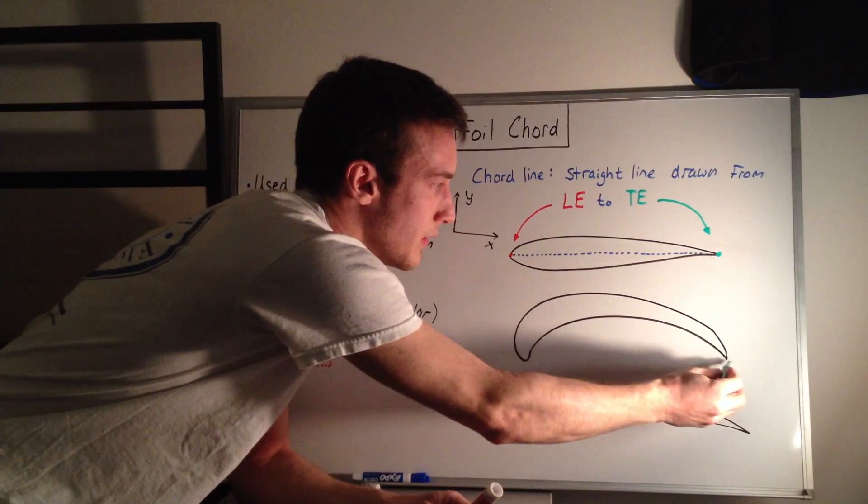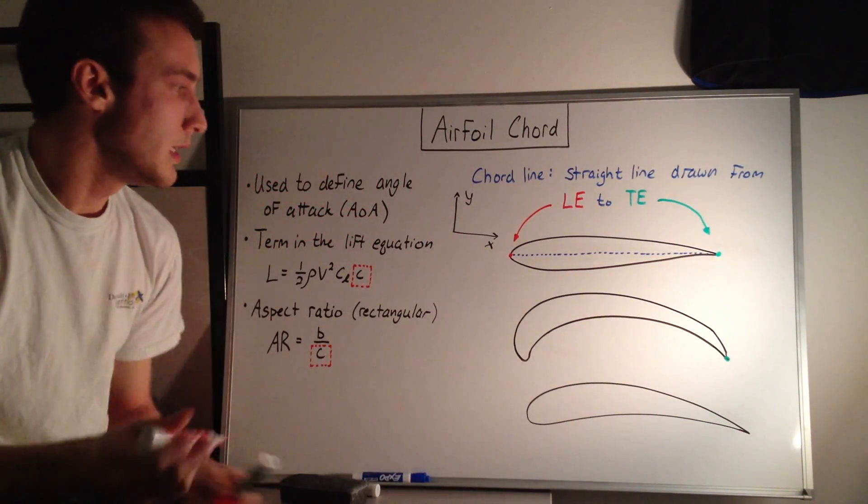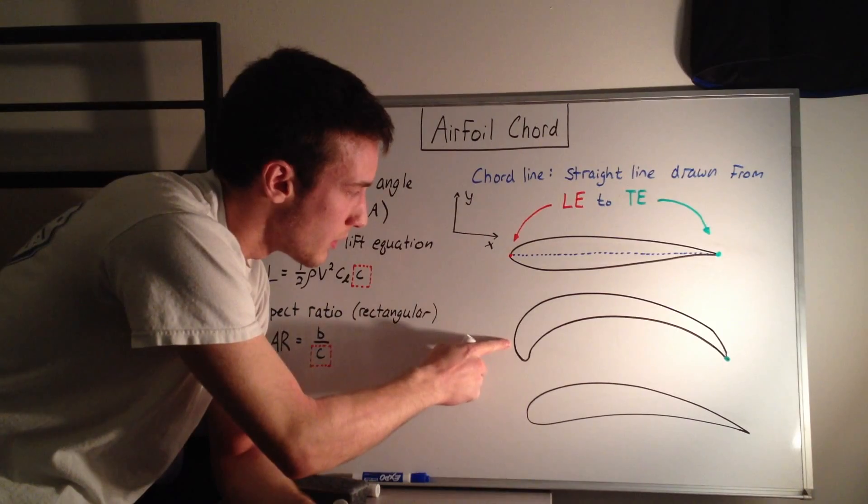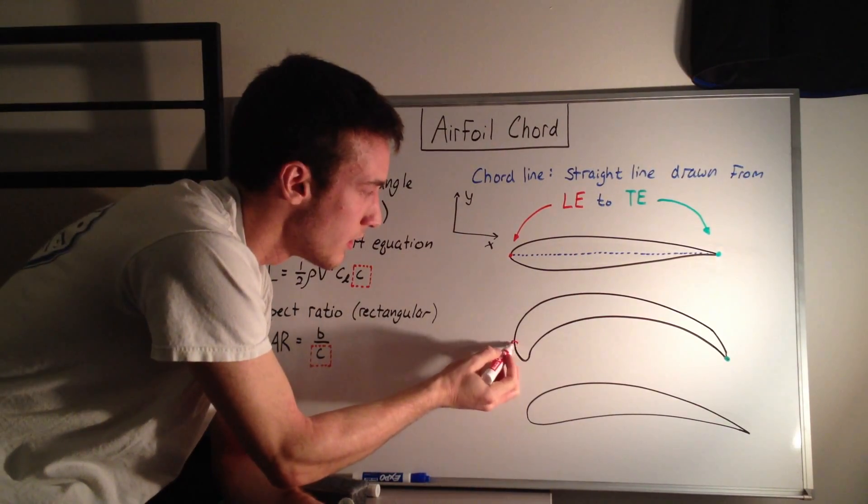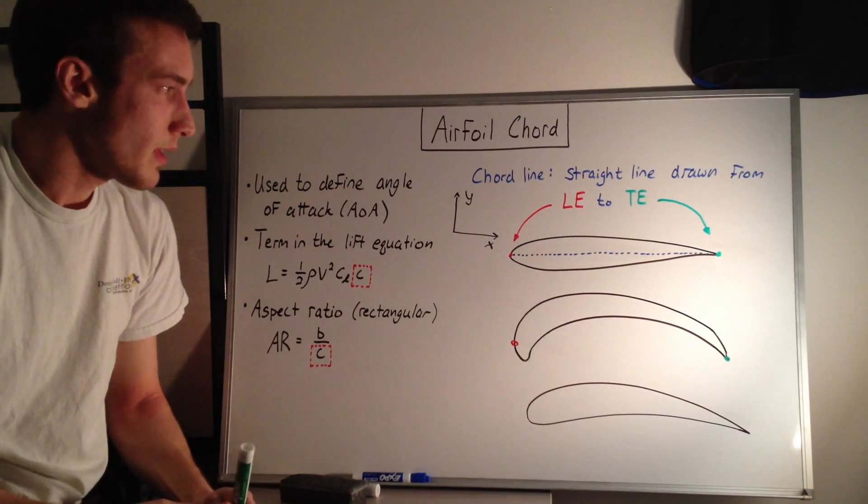what you get is the trailing edge back here again, which is fine, but the leading edge, if you look at what the most forward x-point is, it's actually right there. And that's fine, in which case the cord line,